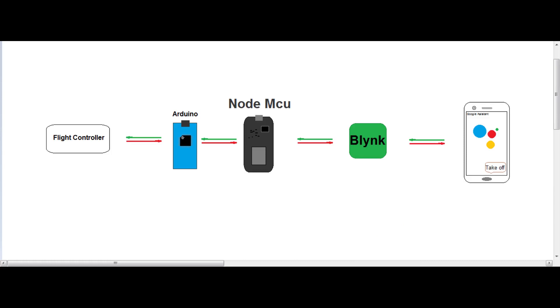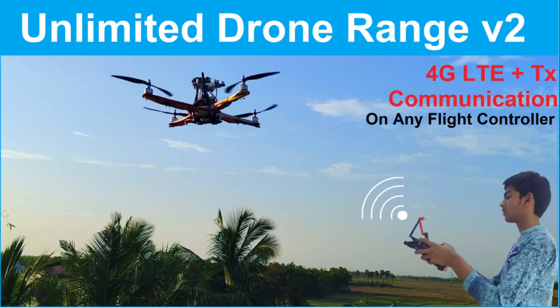IFTTT will schedule a web request to the Blynk cloud with my project auth token, and the NodeMCU will send commands to the flight controller as per my set commands in Google Assistant. If you want to make this system, you have to follow this video and also complete the prior setup — everything else will be the same. Now all you have to do is set up IFTTT.